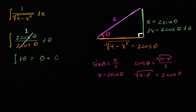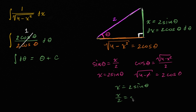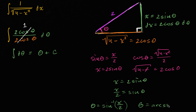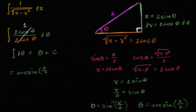We're not done yet — we want the answer in terms of x. Since x equals two sine theta, dividing both sides by two gives x over two equals sine theta. Solving for theta, we get theta equals the inverse sine — the arcsine — of x over two. So the final answer is arcsin(x/2) plus C.